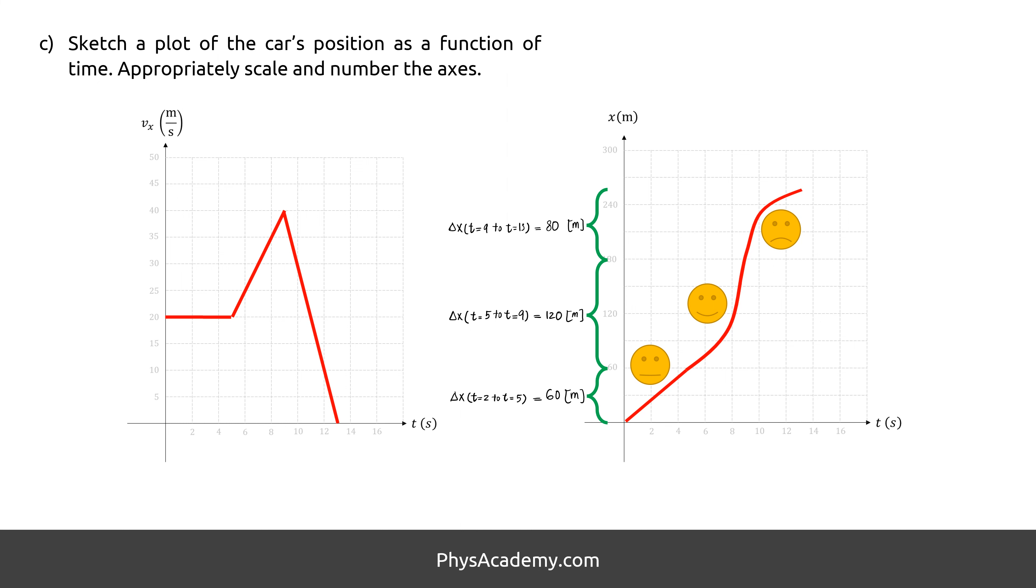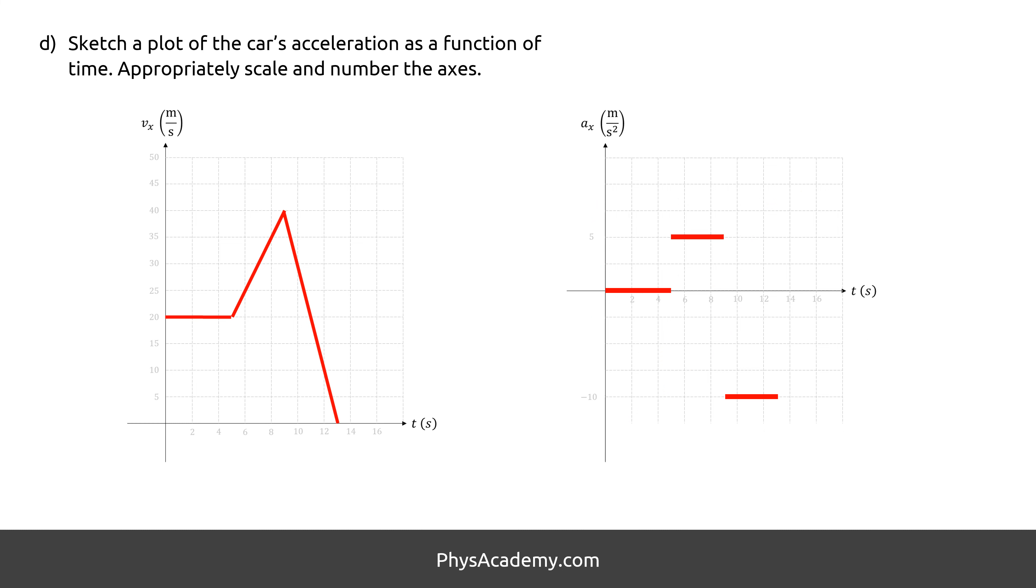Remember, we match the displacement of each part with the values we have from part B. We focus on the slopes to generate the acceleration versus time from a velocity versus time. The slope of the first part is 0, therefore, the acceleration is 0. The slope of the second part is plus 5 meters per second squared, and the third part is minus 10 meters per second squared.